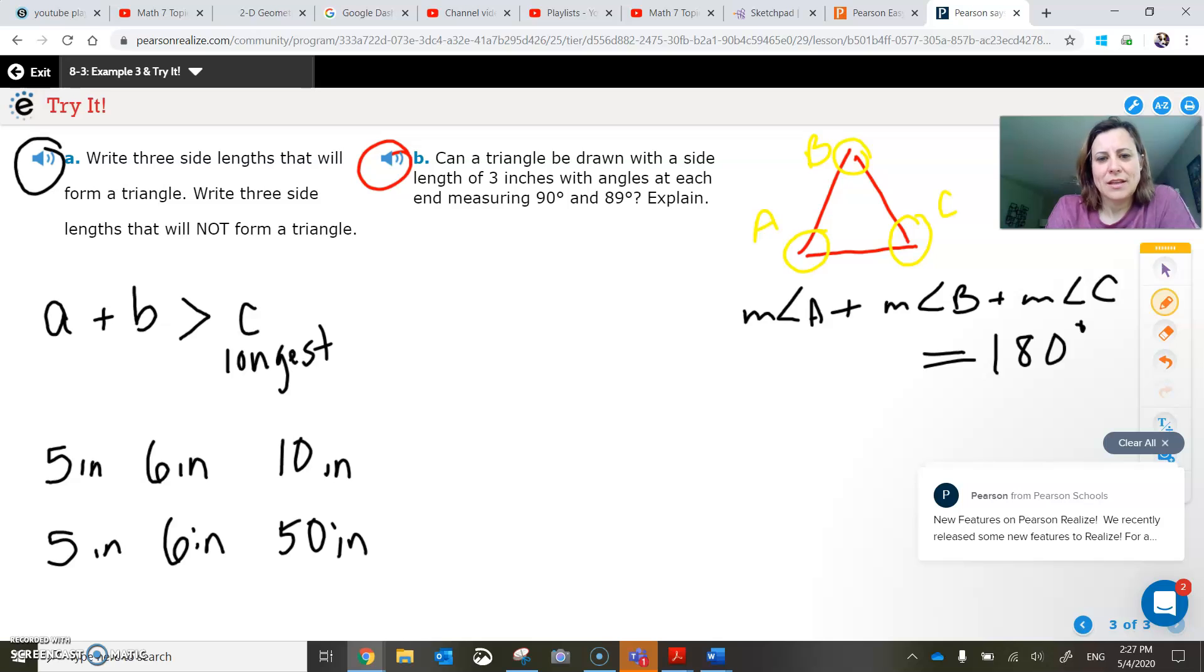So this says there's a side length of three inches, and that there's an angle on one side measuring 90 degrees, and an angle on the other side measuring 89 degrees, which is slightly less than 90. Well, if we kept going like this and like this, do you notice how the distance from here to here, from here to here, do you notice how that distance is getting less and less? That means eventually, if we could keep going, they're going to meet at the top.